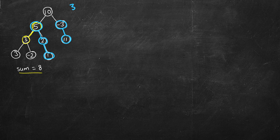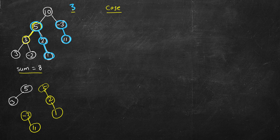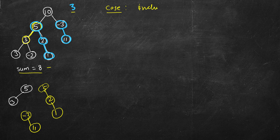The three paths are: 5→3, then 5→2→1, and -3→11. To arrive at these solutions we consider two cases. Case 1: we look for paths that include the root — so the remaining sum becomes 8 minus the current value. Case 2: root is not included in the path at all.